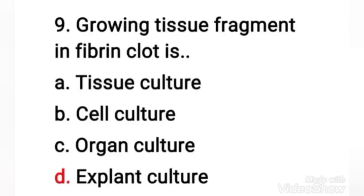Next question: growing tissue fragments in fibrin clots — tissue culture, cell culture, organ culture, or explant culture? The right answer is option D, explant culture. In this method, components of minced tissue are grown as explants embedded in plasma clots. Earlier, adenoid tissue explant cultures were used for isolation of adenoviruses. This method is now seldom used in virology.